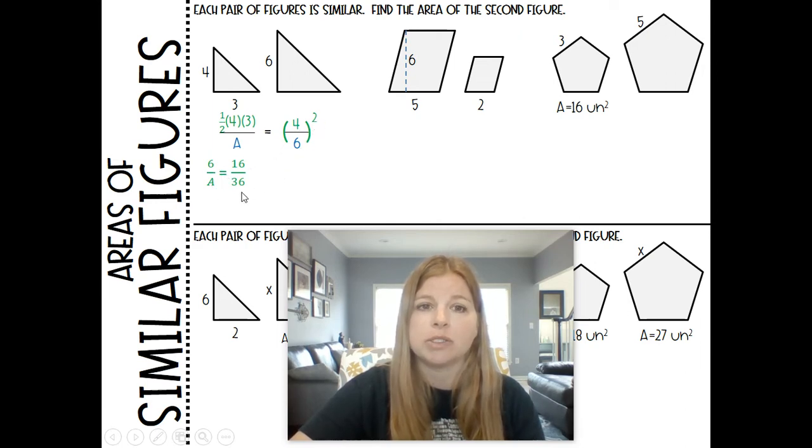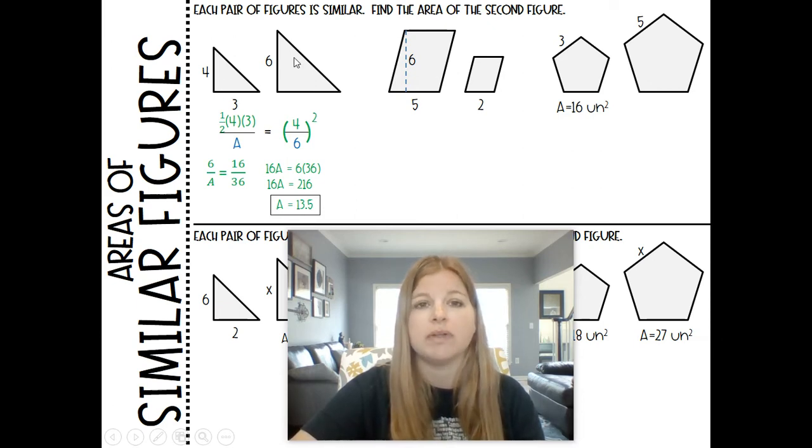The area of my first triangle would be 6. So that's 6 over A equals, I square the numerator, square my denominator. So it becomes 16 over 36. Now this is just a basic proportion to solve. We cross multiply. So 16 times A equals 6 times 36. I solve for A and I end up getting my area of 13.5.